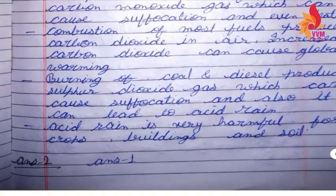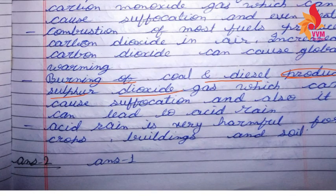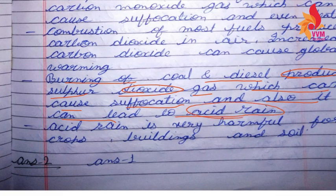Burning of coal and diesel produces sulfur dioxide gas. Sulfur dioxide can cause suffocation and also lead to acid rain. When coal and diesel are burned, sulfur dioxide is released.